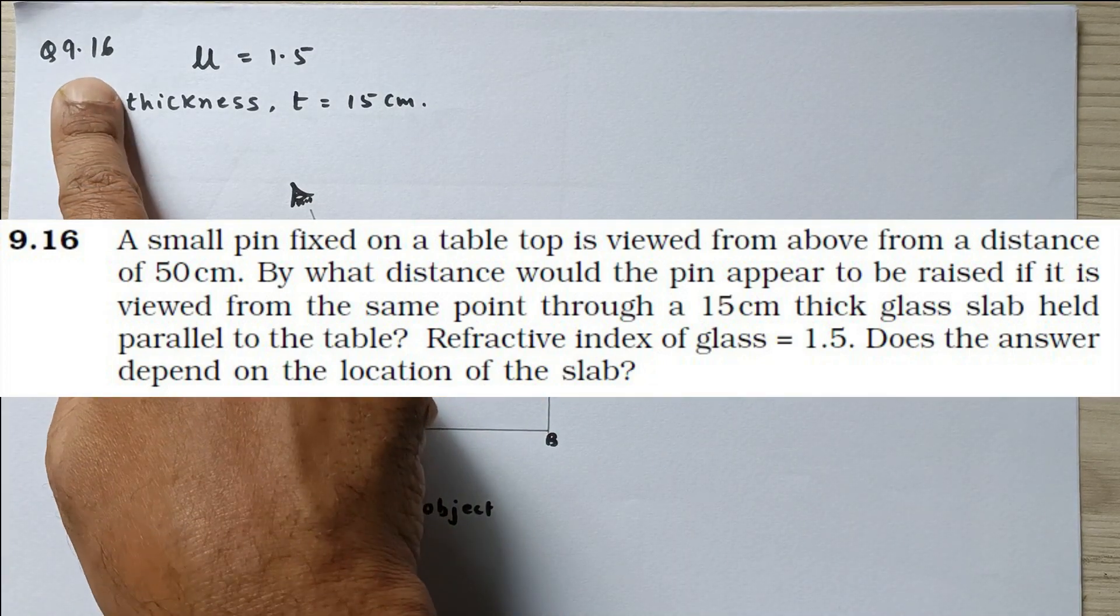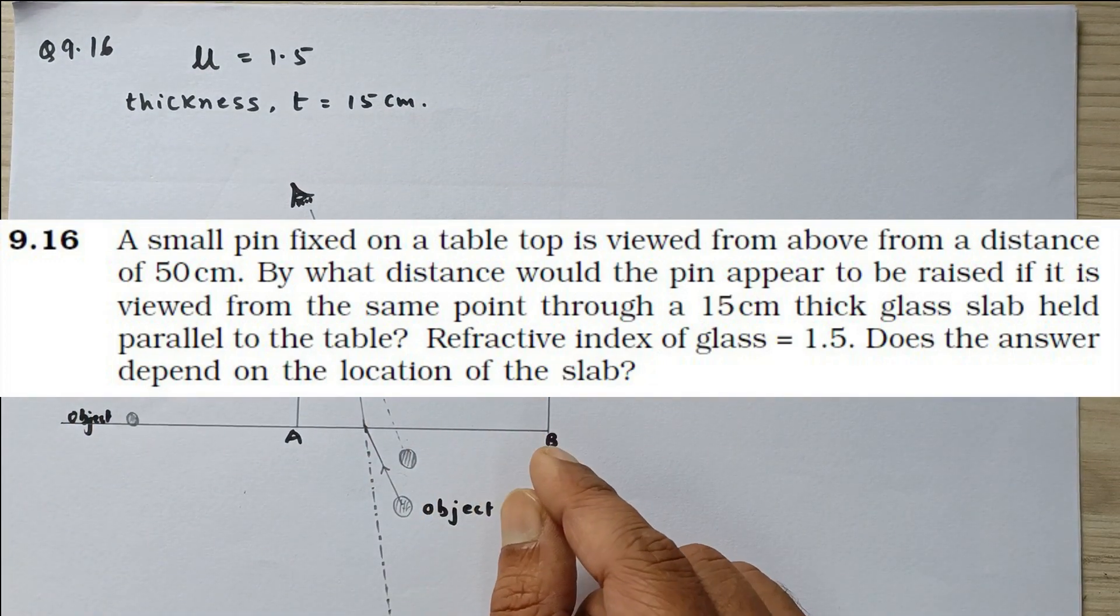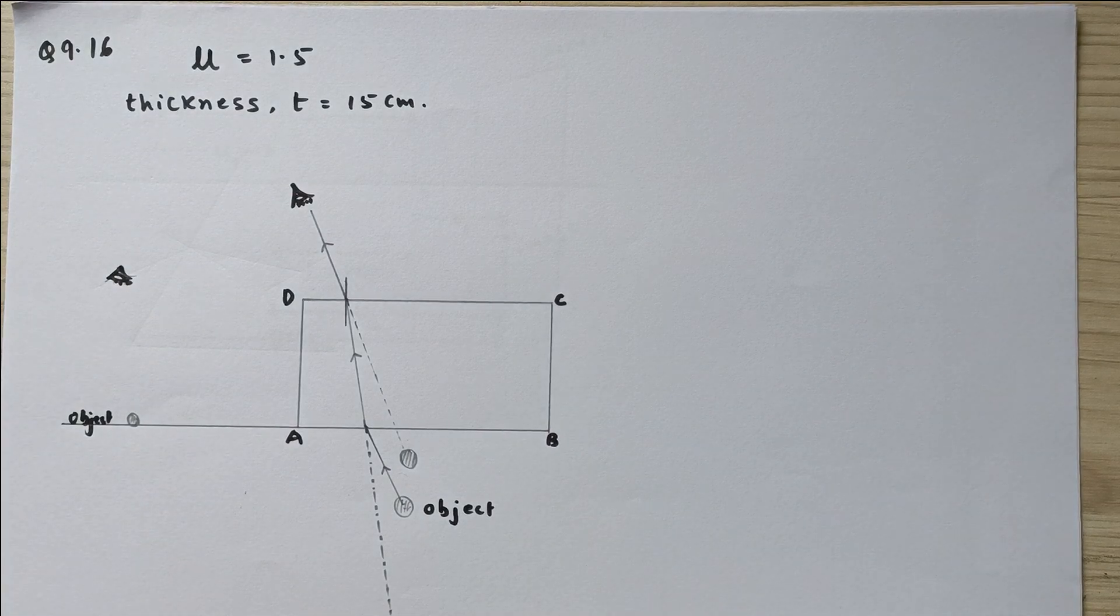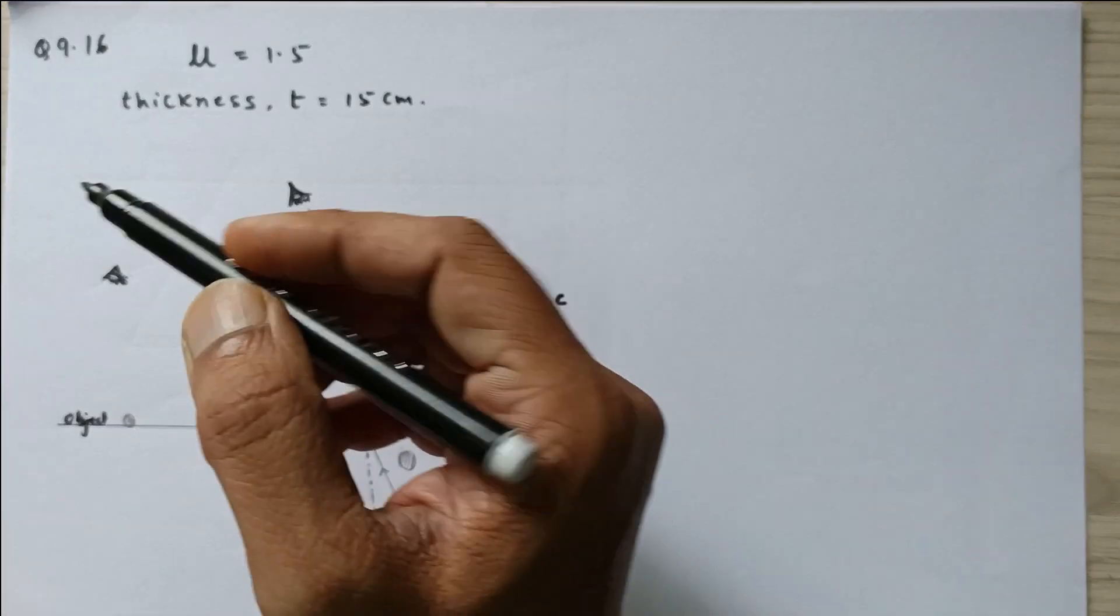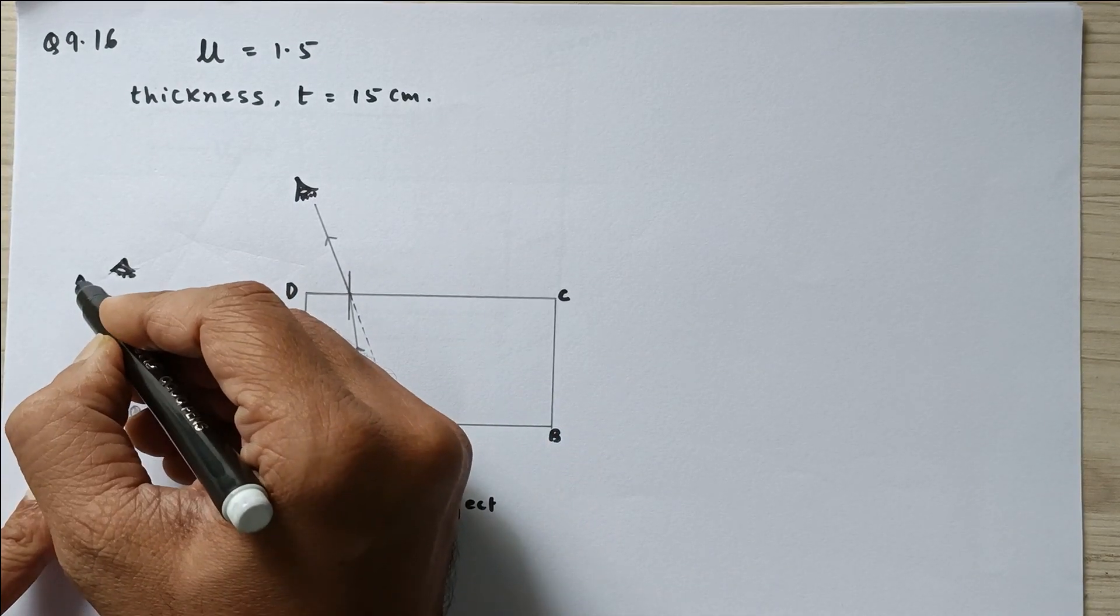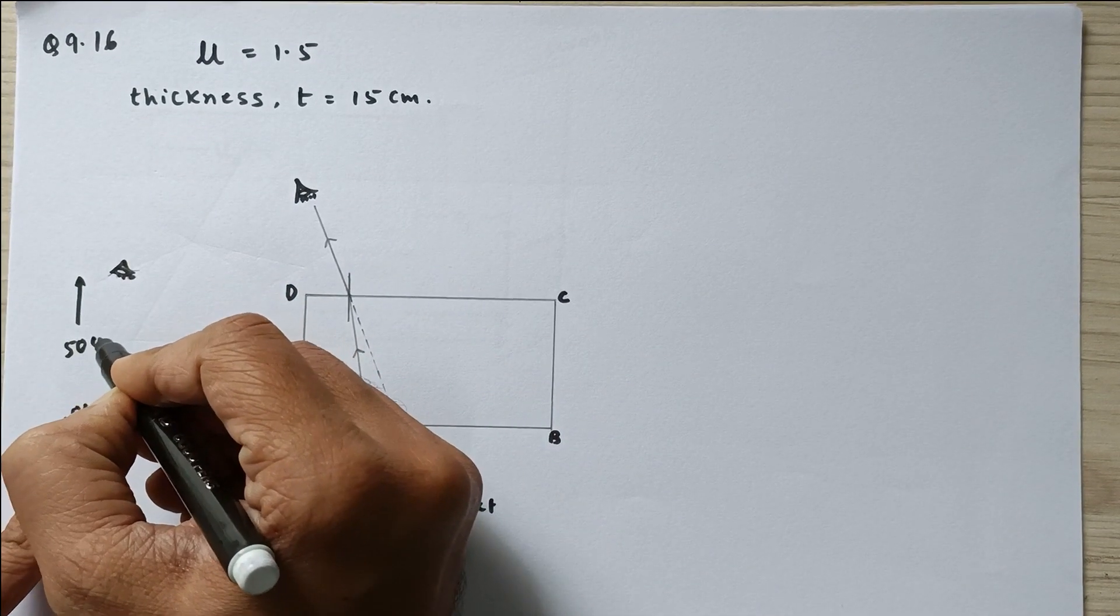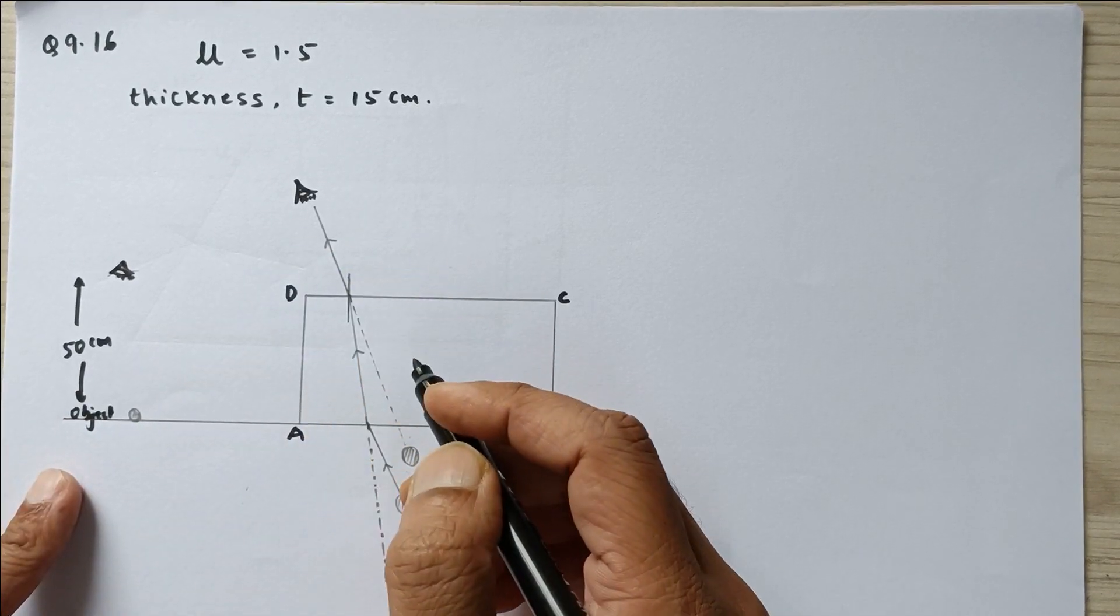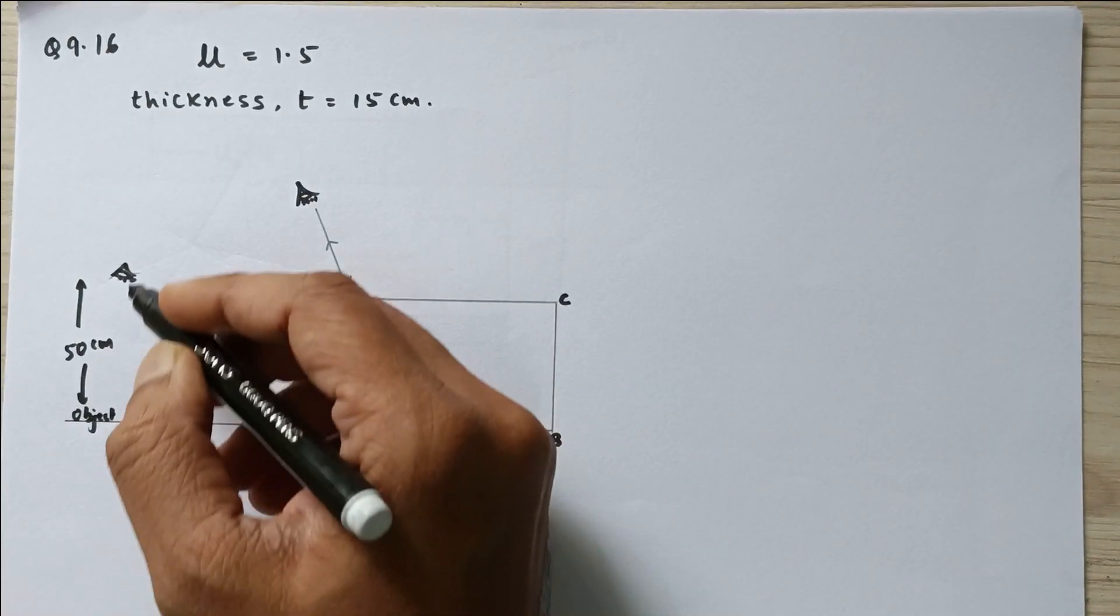In this video we are going to discuss problem number 9.16 from standard 12 physics NCERT textbook, ray optics chapter. We are given that the eye is actually seeing an object which is at a distance of 50 centimeters from the eye. So this object is 50 centimeters away from the human eye.